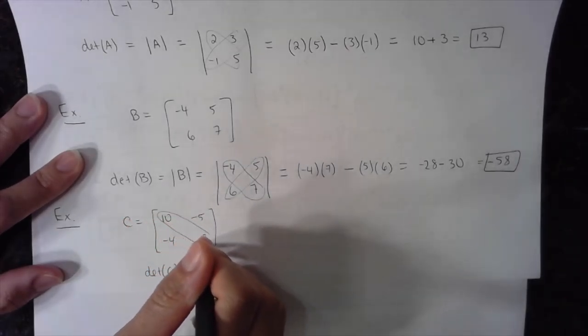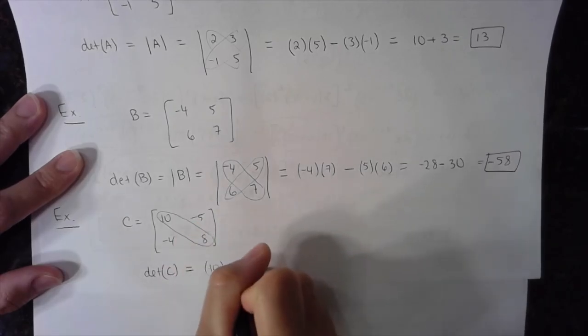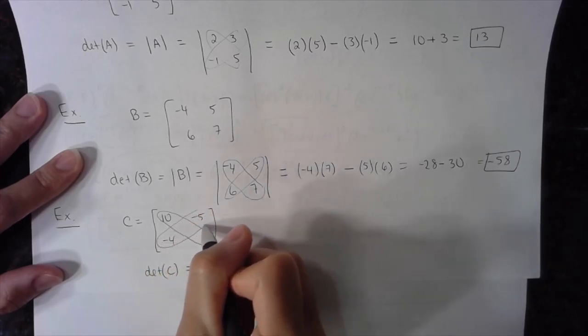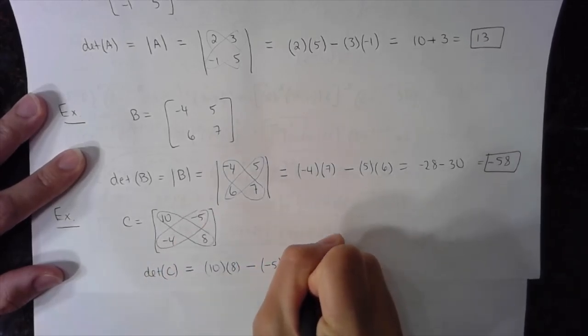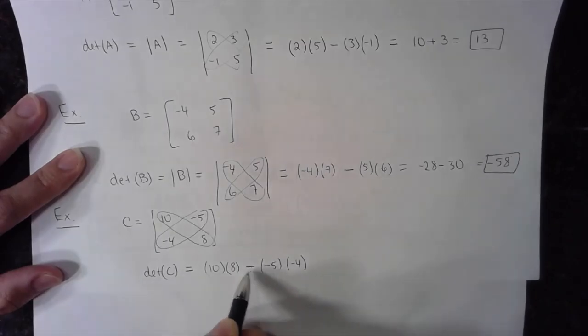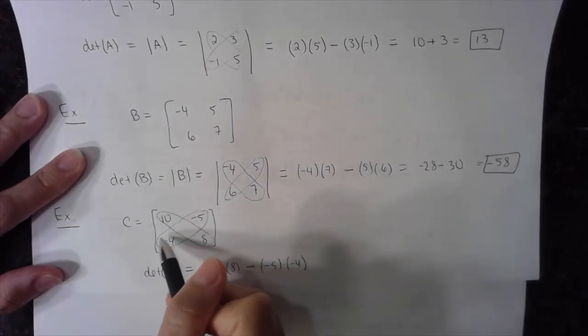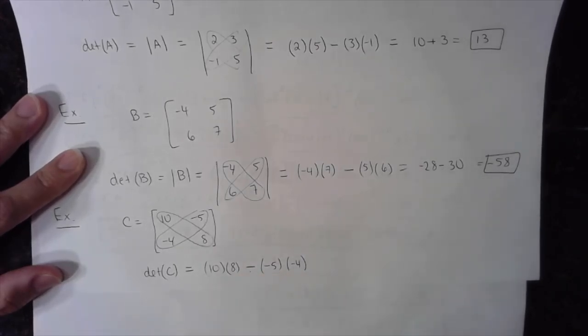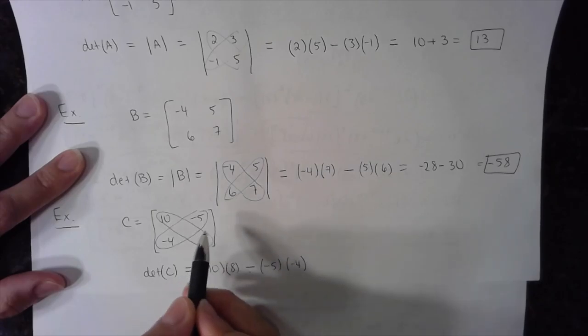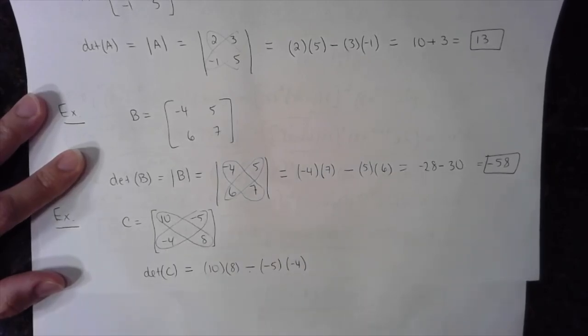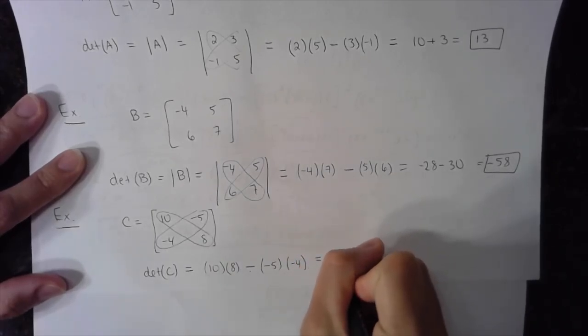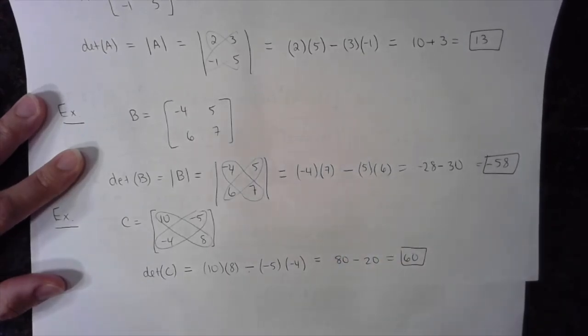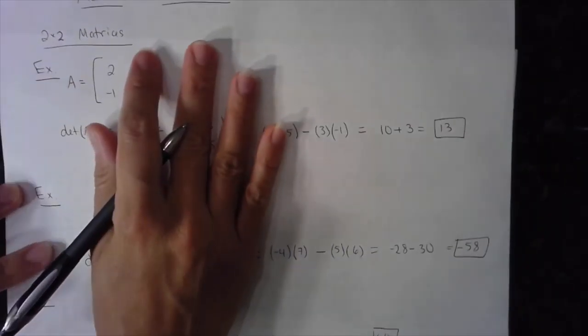Start with this diagonal: 10 times 8 minus this diagonal, negative 5 times negative 4. Don't forget there's always a minus between the product of this diagonal and the product of this diagonal. Don't let this minus take the place of negatives. 10 times 8 minus negative 5 times negative 4 is equal to 80 minus 20 or 60. Nice and easy.